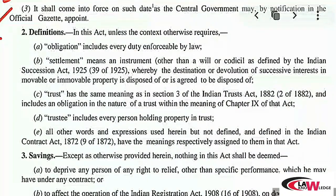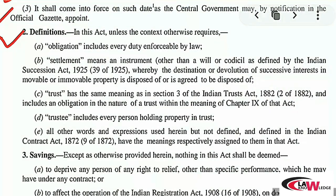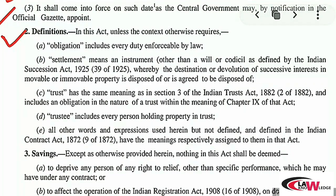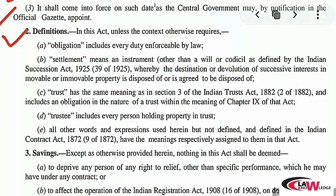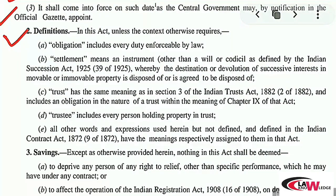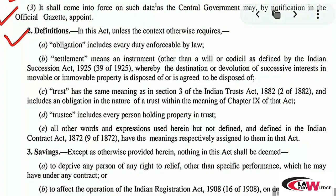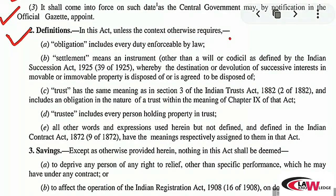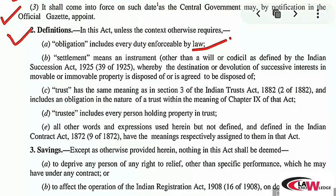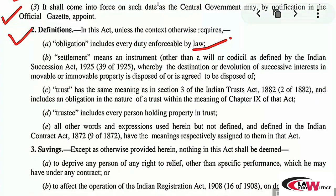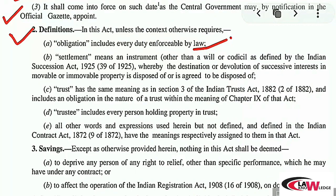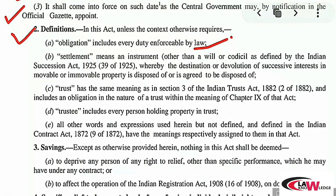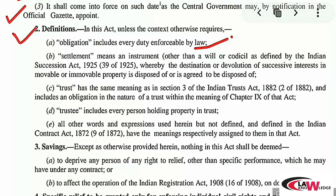Next we discuss Section 2, which is the definition clause. The purpose of the definition clause is that wherever in the Act you find words that are defined in this clause, you must give them the meaning as provided in the definition clause. The first definition in the clause is 'obligation.' It says: obligation means every duty enforceable by law. It is a very simple definition — if A and B enter into a contract, A has a duty to perform his promise and B has a duty to perform his promise. This duty enforceable by law is called obligation.